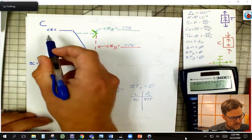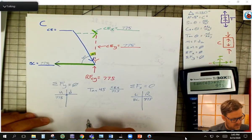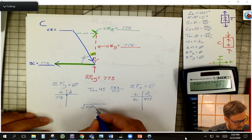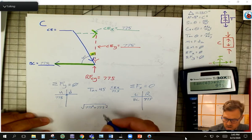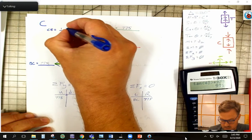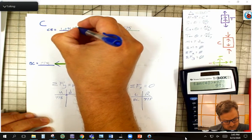The last thing is CE, and I'm going to use the Pythagorean theorem to find that. So I'll put my, this is my calculator, and I'll go 775 squared plus 775 squared, and I'm going to get 1096.02.